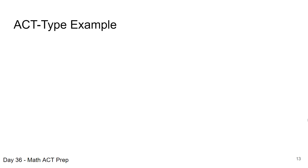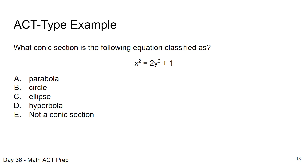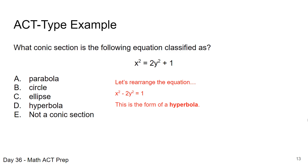Let's look at an ACT-type example. The question asks: what conic section is the following equation classified as? First, rearrange the equation to get all terms on the same side. What should jump out is that there is a negative sign between the x squared and the 2y squared terms. We discussed that the only conic section with that feature is the hyperbola, so the answer is choice D. No heavy calculations needed — just recognizing the classification.